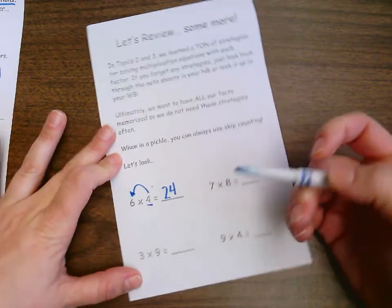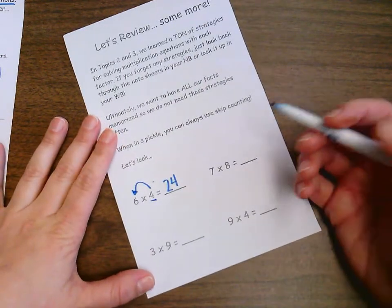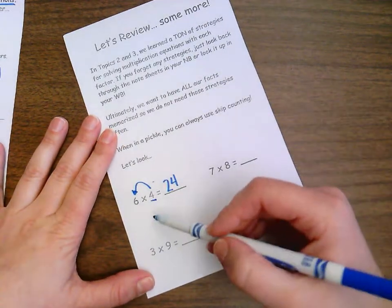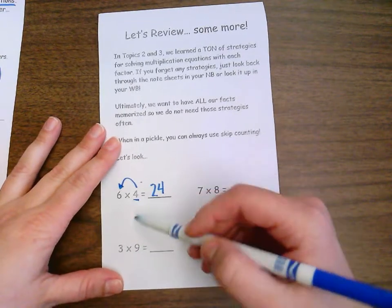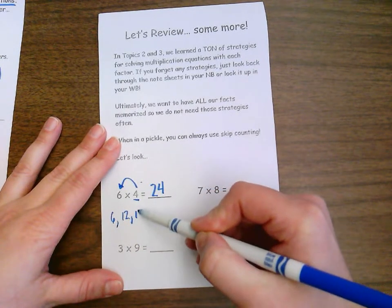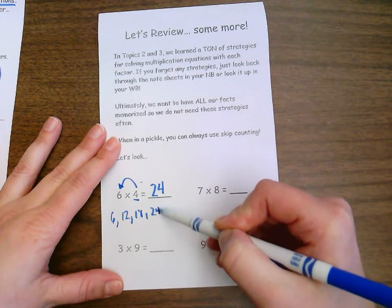If I forget that strategy, I can always go back to some skip counting and some repeated addition where I can skip count by six four times. Six, 12, 18, 24.